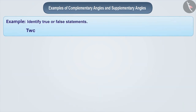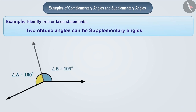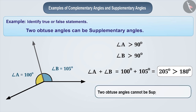Statement: Two obtuse angles can be supplementary angles. Can you tell whether the given statement is true or false? Think. Suppose angle A and angle B are obtuse angles — both greater than 90 degrees. If we add both angles, then the sum of angle A and angle B will be greater than 180 degrees. Therefore, two obtuse angles can never be supplementary angles, and the given statement is false.